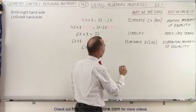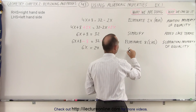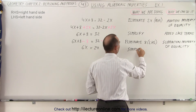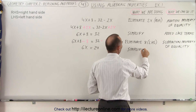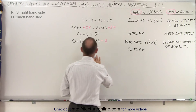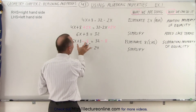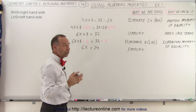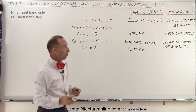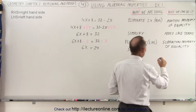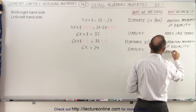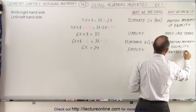What I did was simplify the equation. Why am I allowed to do that? Because I subtracted like terms — I subtracted like terms to simplify.